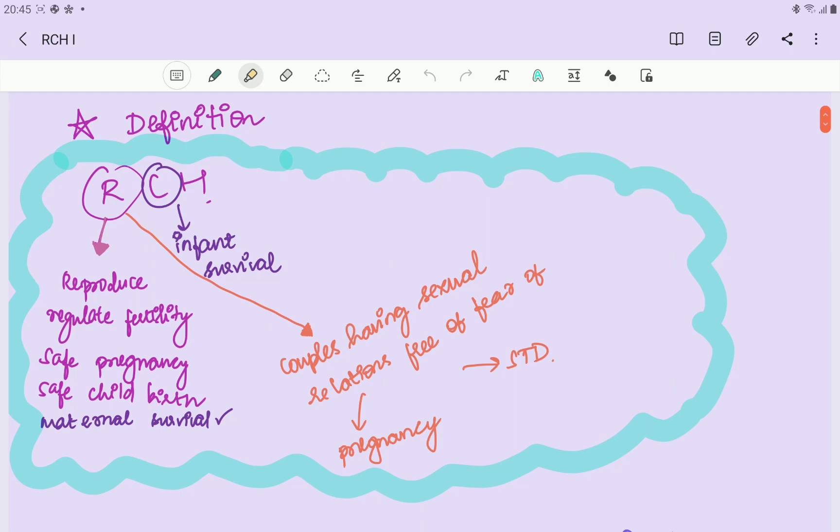First, we will start with the definition. Reproductive Child Health includes reproductive health - people are able to reproduce and regulate their fertility, have safe pregnancy and safe childbirth. The pregnancy will be successful in terms of maternal survival and infant survival. They can have sexual relations free of fear of pregnancy and sexually transmitted disease because the program also concentrates on spreading awareness of contraceptive use to prevent and treat sexually transmitted diseases.